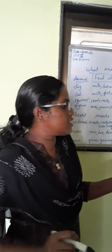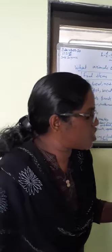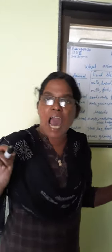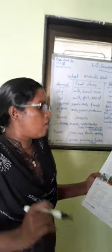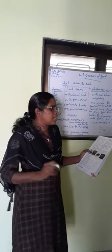Next one, omnivorous. This is crow, bear — omnivorous. Omnivorous means animals that eat both plant products and flesh of other animals. Both plants and flesh — that is called omnivorous. Examples: humans, bears, rats, crows, and cockroaches. Special characteristics: omnivorous have different types of teeth that help them eat both plants and flesh.